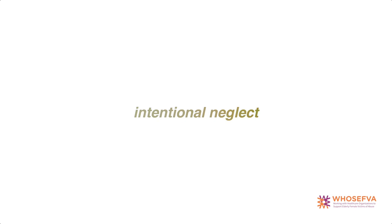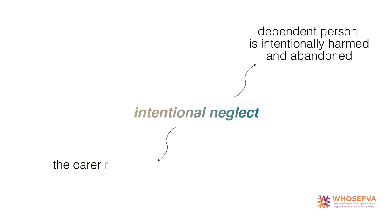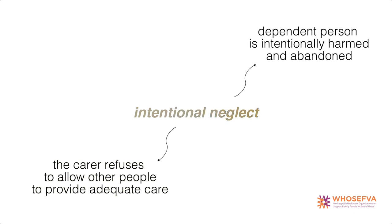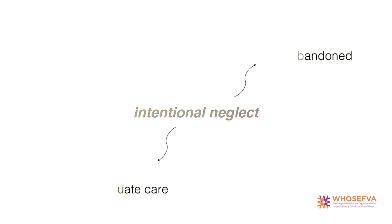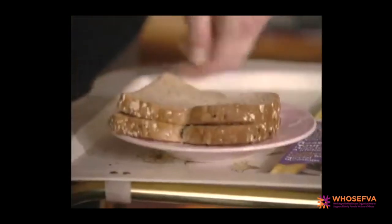Neglect is considered intentional — sometimes called active neglect — when the dependent person is intentionally harmed and abandoned, or when the carer refuses to allow other people to provide adequate care. Specific forms of neglect include inadequate provision of food and water.